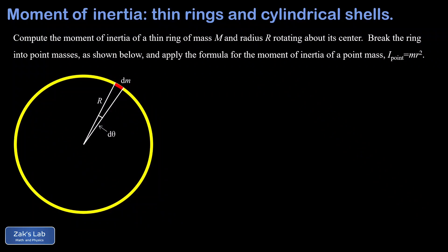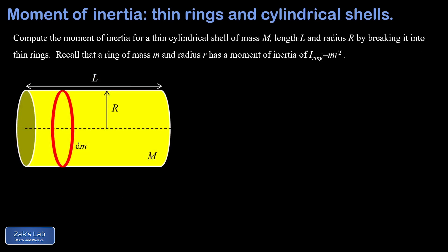In this video, we're going to start by computing the moment of inertia of a thin ring rotating about its center. We're going to do this by breaking it into point masses, as you can see in the picture below — we call each of those point masses a dm. Then in the second half of the video, we're going to take our result and use it to compute the moment of inertia of a thin cylindrical shell rotating on its symmetry axis by breaking that cylindrical shell into thin rings, calling the mass of each thin ring dm.